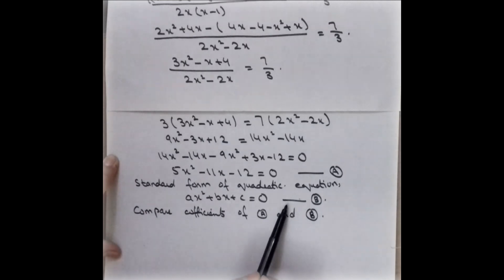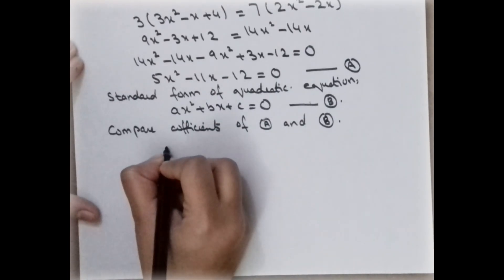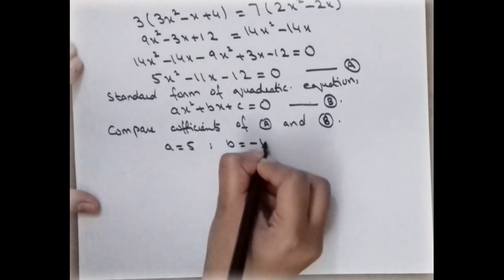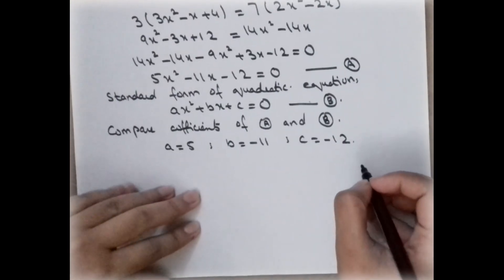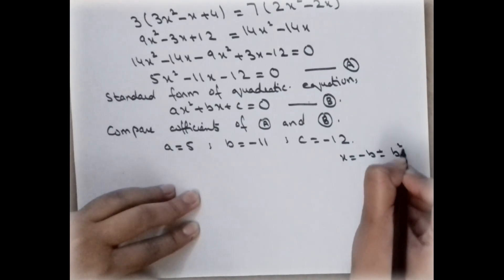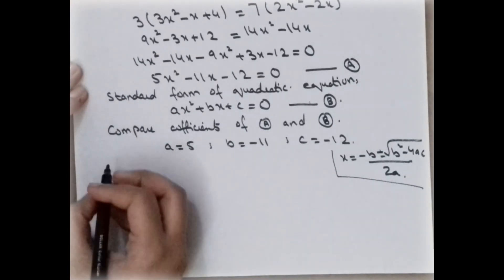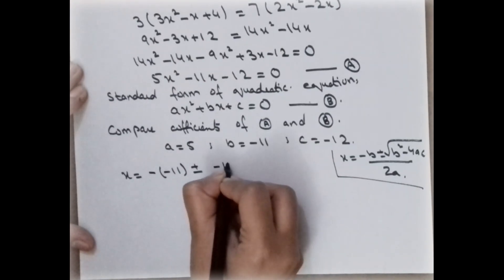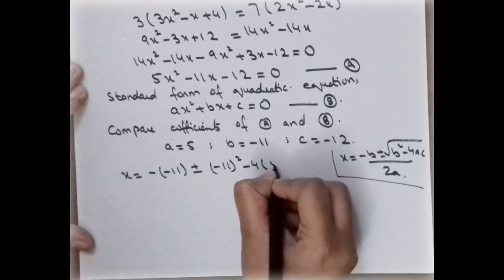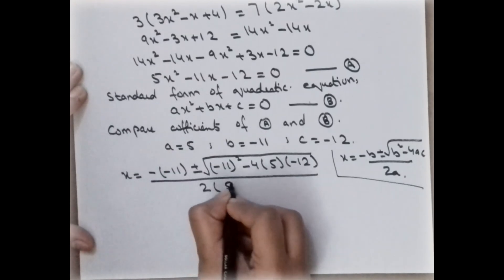Now compare the coefficients with the standard quadratic equation. We get a = 5, b = -11, and c = -12. Applying the quadratic formula x = (-b ± √(b² - 4ac)) / 2a, we substitute: x = (-(-11) ± √((-11)² - 4(5)(-12))) / (2 × 5).